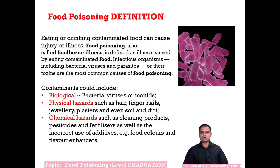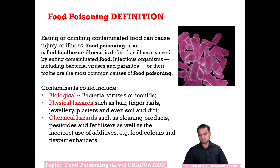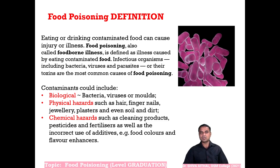Physical hazards include hairs, fingernails, jewelry, plastics, plasters, and even soil and dirt. Artificial jewelry, if it falls into food, has coatings which can peel off and add chemical contamination. Chemical hazards may also include cleaning products such as pesticides and fertilizers, as well as incorrect use of food additives — mostly toxic chemicals and flavor enhancers, essences, etc.